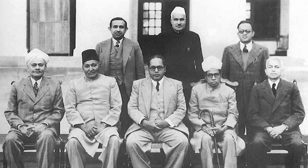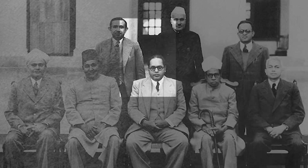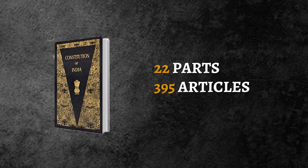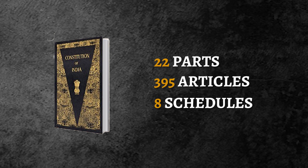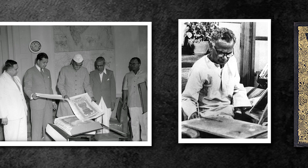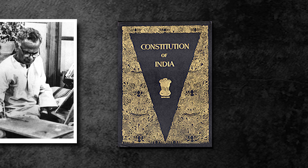The drafting committee was supported ably by the constitutional advisor B.N. Rao and the chief draftsman S.N. Mukherjee. The final outcome was the Constitution of India with 22 parts, 395 articles, and 8 schedules. The original copies were handwritten in English by Prem Narayan Raizadha and in Hindi by Vasanth Krishna Vedya. All illustrations were made by a team of artists from Shantiniketan, led by Nandlal Bose. The Constitution was enacted on 26th November 1949 — celebrated as Constitution Day — and enforced on 26th January 1950, celebrated as Republic Day.